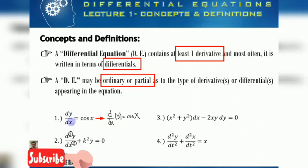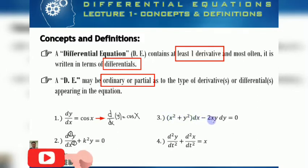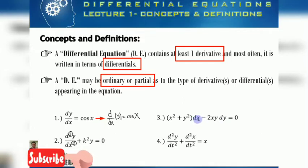This is the first derivative of y with respect to x — equivalent to the first derivative because the power here is one. For number three, we have: (x squared plus y squared) dx minus 2xy dy equals zero. As long as you have this equation you can express it in the form dy over dx.